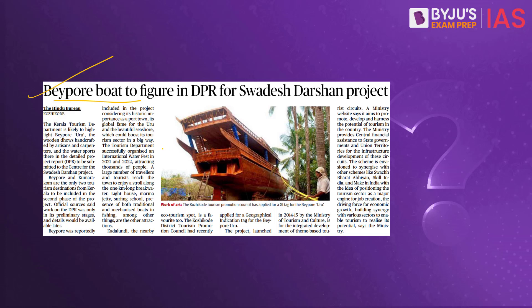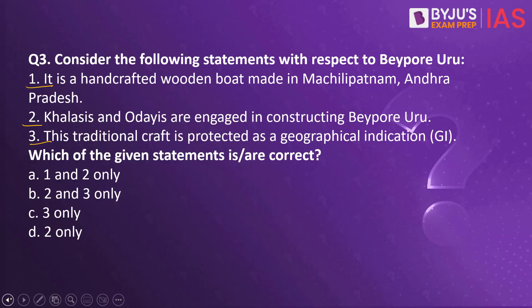Beypore Uru is a wooden ship or sailing boat handcrafted by skilled artisans and carpenters in Beypore in Kerala. They are made purely from premium wood without using any modern techniques. The wood is sourced the traditional way, requiring immense expertise. It takes anywhere between 1 to 4 years to build each Uru, and the entire process is done manually. The name Uru is associated with the traditional shipbuilding culture of Kerala, and Beypore Uru is made in Beypore in Kerala — so statement 1 is incorrect.